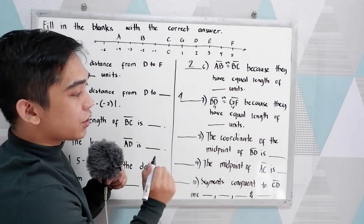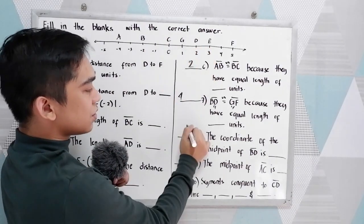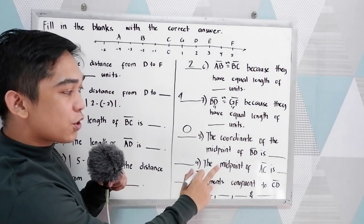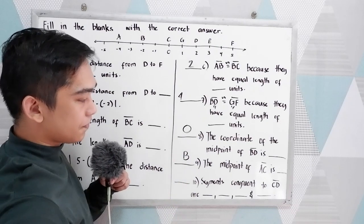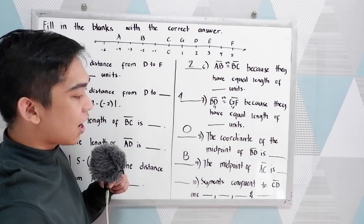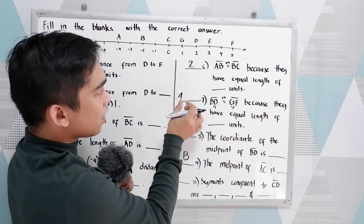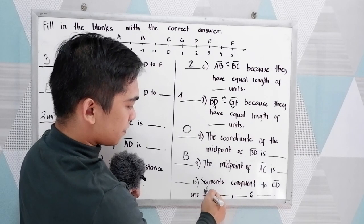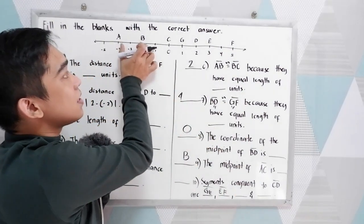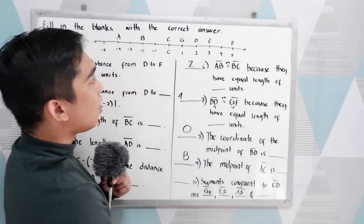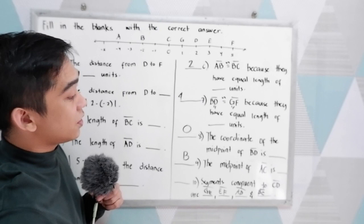Number 8: The coordinate of the midpoint of BD is blank — the midpoint coordinate is 0. Number 9: The midpoint of AC is blank — the midpoint is point B. Number 10: Segments congruent to CD are blank. From C to D there are 2 units. Segments equal to that are: segment GE, segment EF, segment AB, and segment BC.